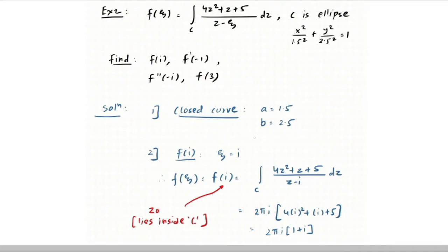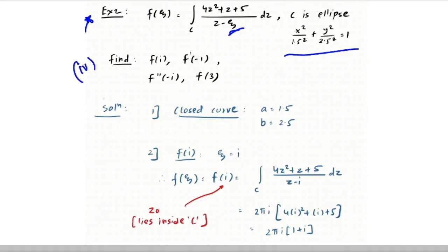Now for Example 2: f(ζ) = ∫_C (4z² + z + 5) dz / (z − ζ), where the closed curve C is an ellipse given by x²/1.5² + y²/2.5² = 1. We need to find: (1) f(i), (2) f'(−1), (3) f''(−i), and (4) f(3).